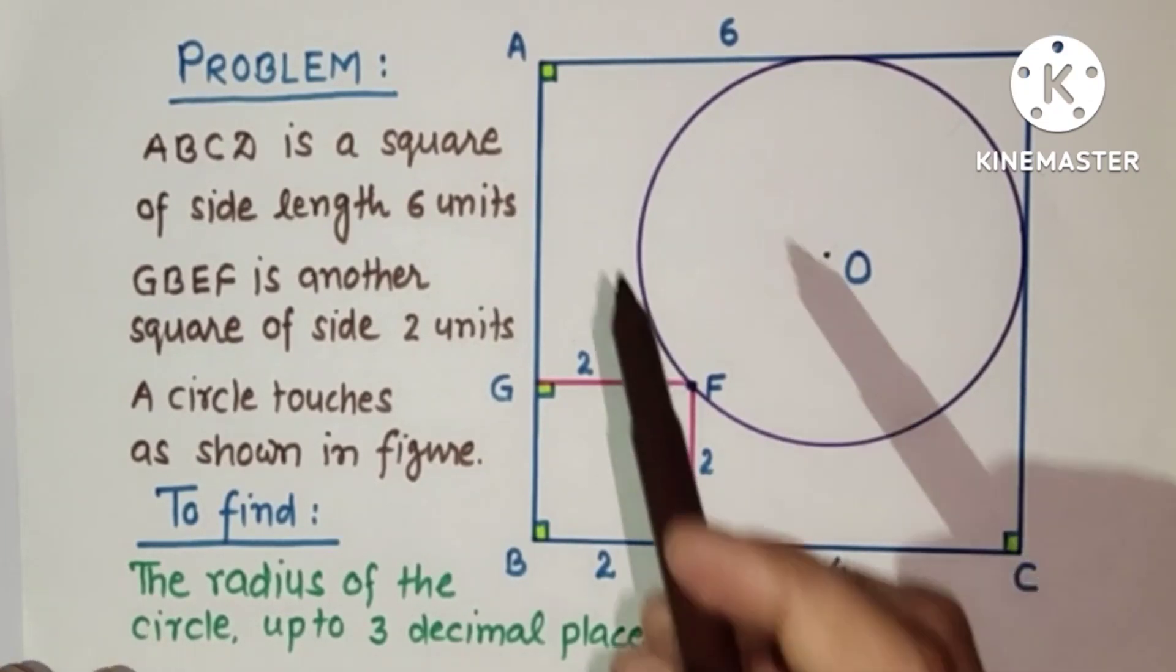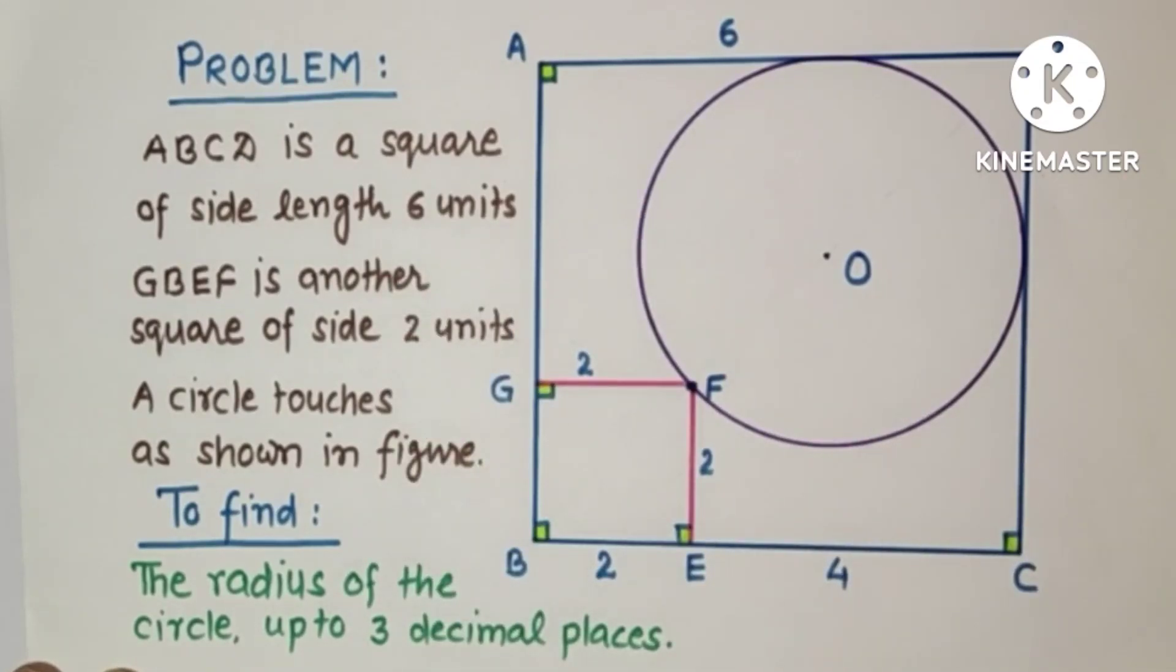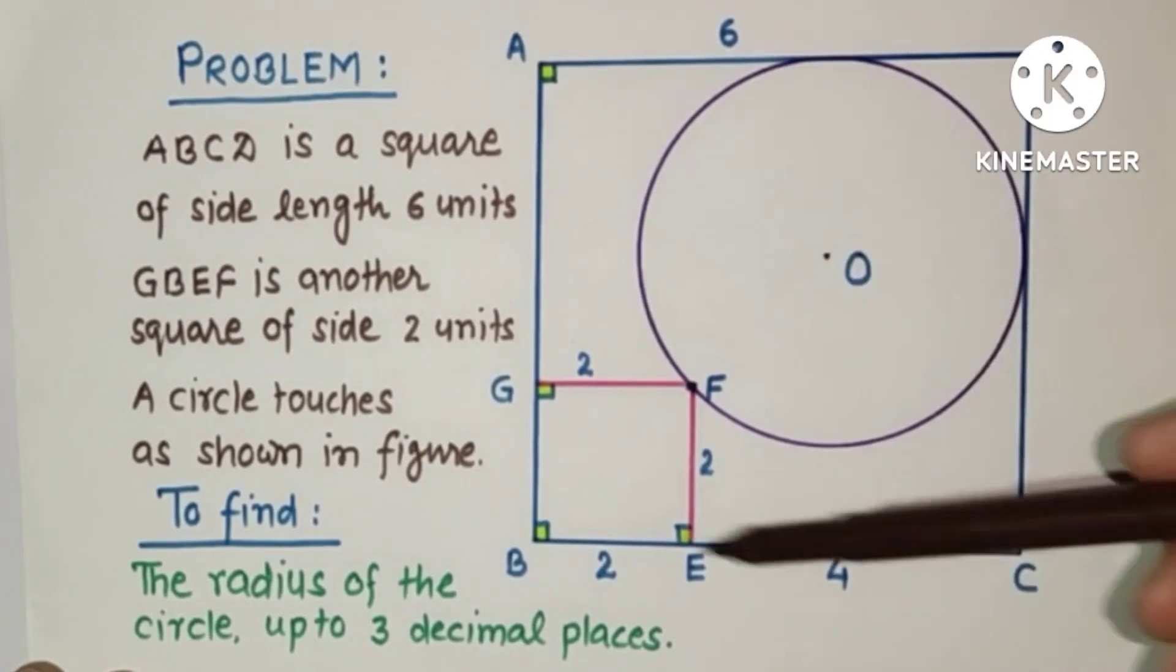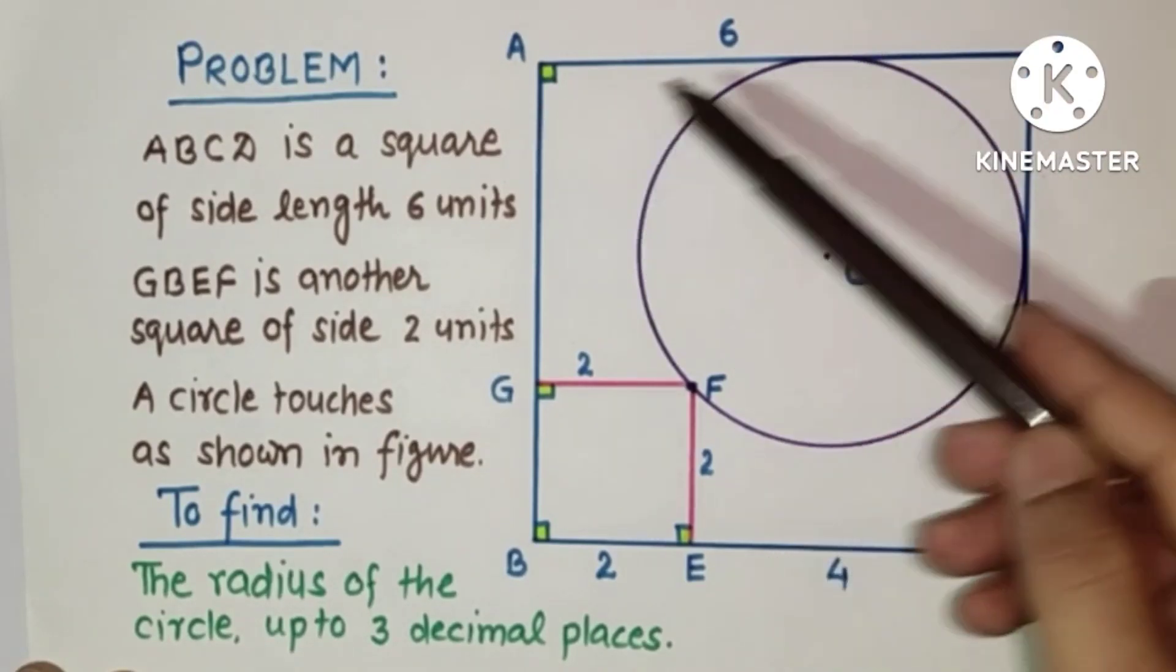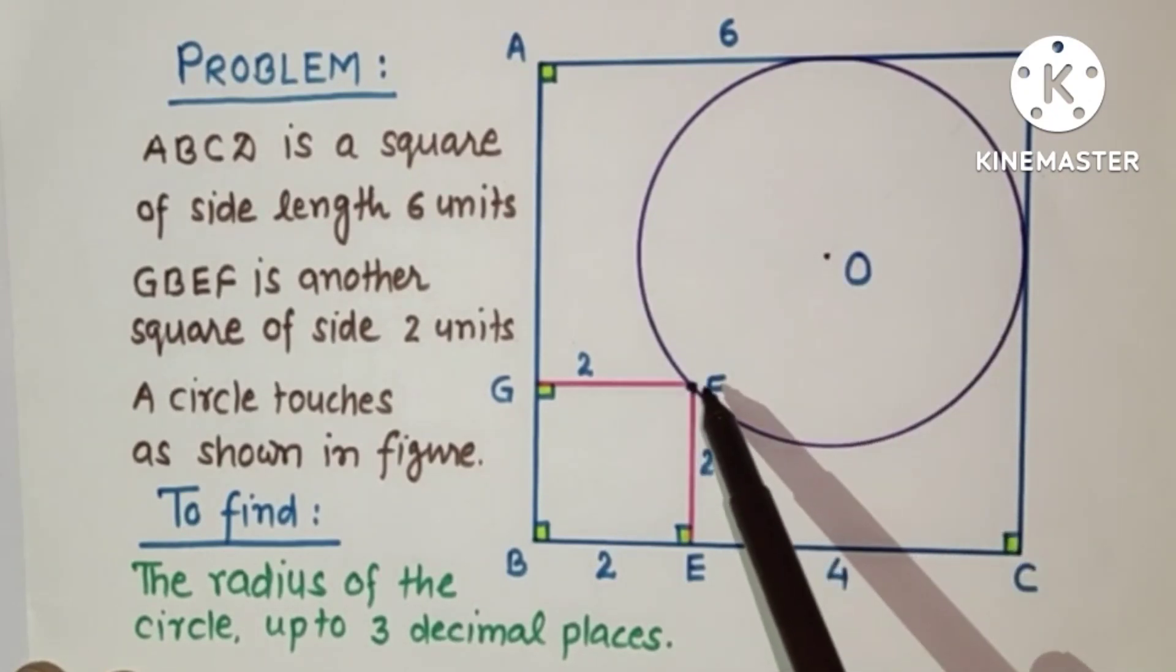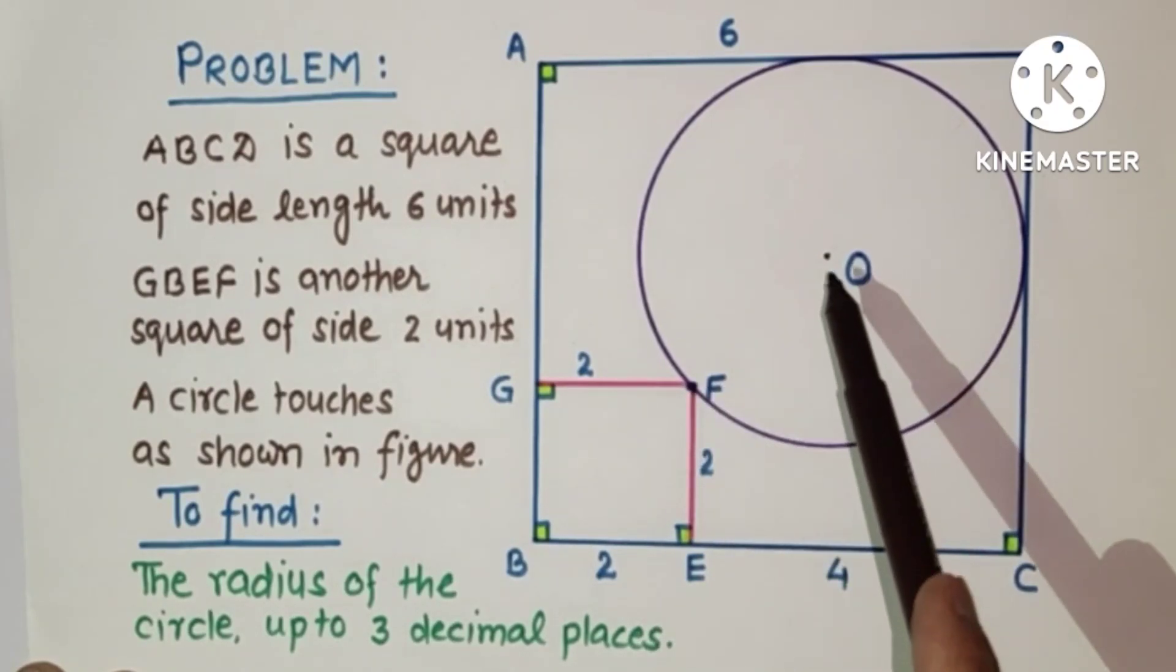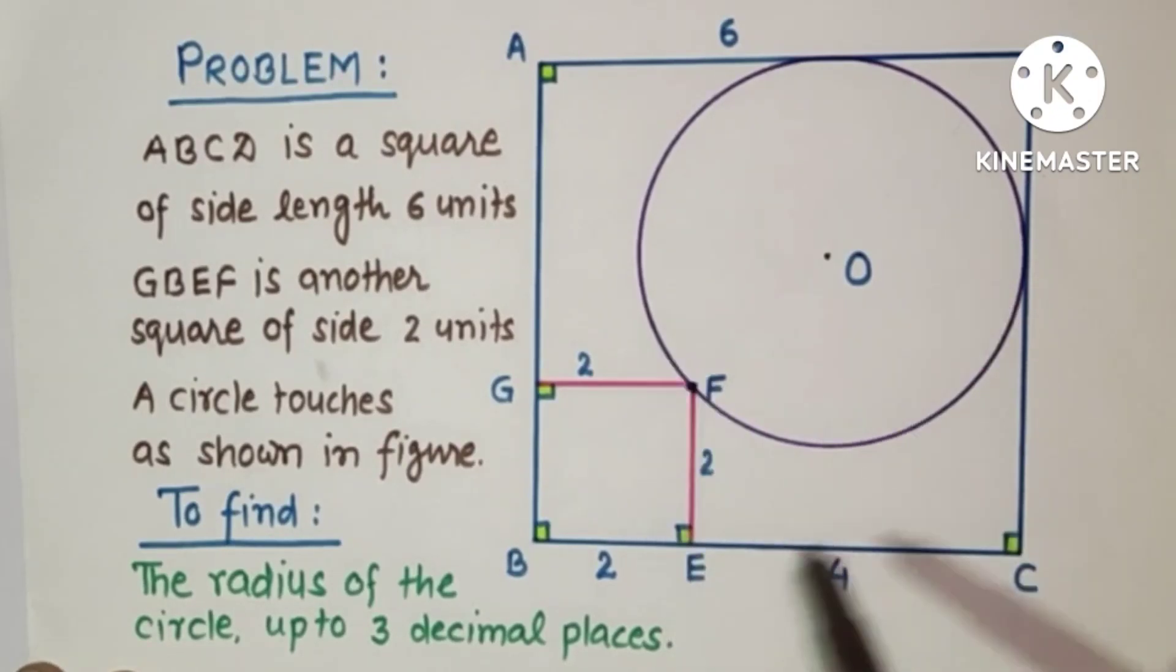In this problem we are given ABCD which is a square of 6 units side length, and another smaller square GBEF whose side length is 2 units, and a circle is in such a way that it touches the bigger square on side AD, touches the sides AD and DC, and passes through the vertex of this smaller square at F. Center of the circle is O. We have to find the radius of this circle.